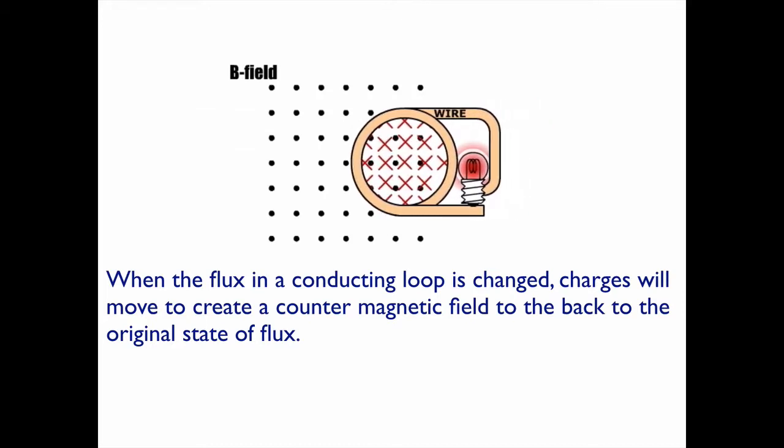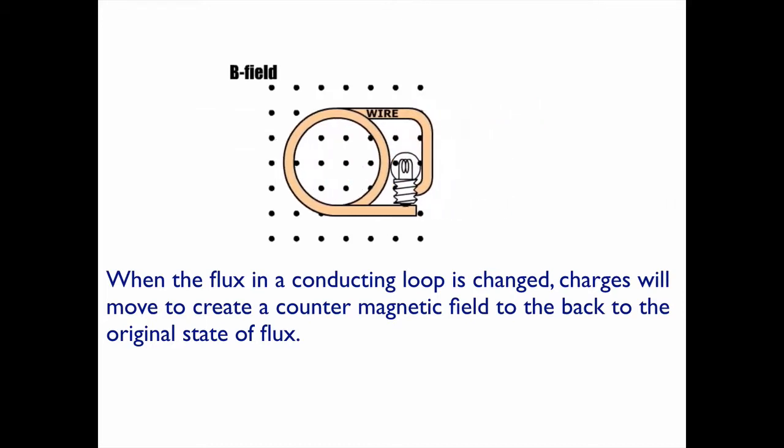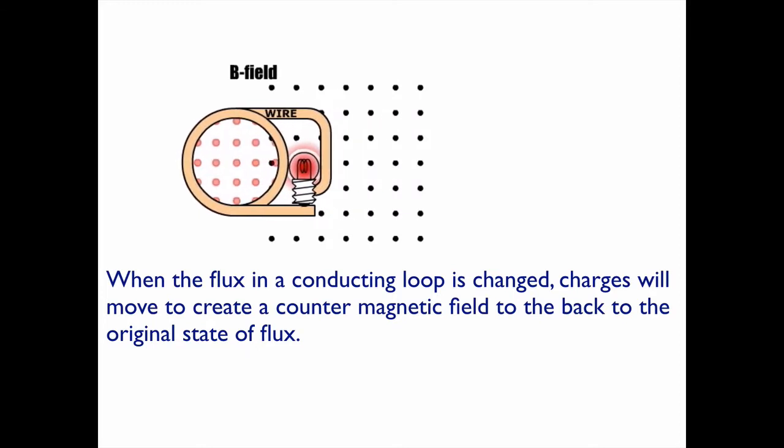There we go. Now the X's and the dots would cancel. Moves through the space of the magnetic field, there's no change in flux.